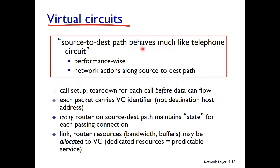Like a telephone call, a connection must be established before data can flow. The call setup is closed by an end call. Each packet carries a VC (Virtual Circuit) identifier, not a destination host address. Every router on the source-to-destination path maintains state for each passing connection, with state information maintained along the path.